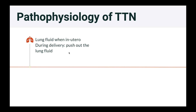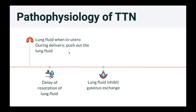During normal vaginal delivery, the uterine contractions push out the lung fluid, and therefore the lung fluid goes out. However, TTN is due to the delay in resorption of lung fluid after the baby is born. When you have excess lung fluid inside, it impairs gas exchange and leads to respiratory distress.